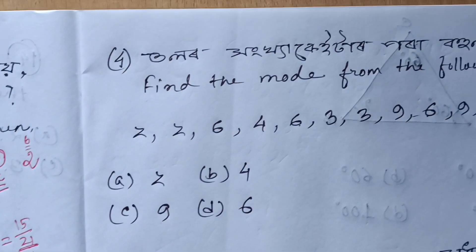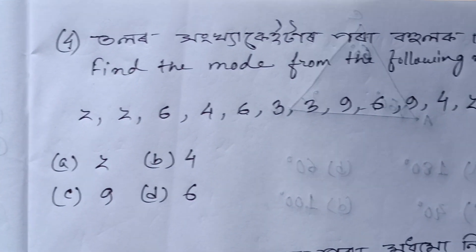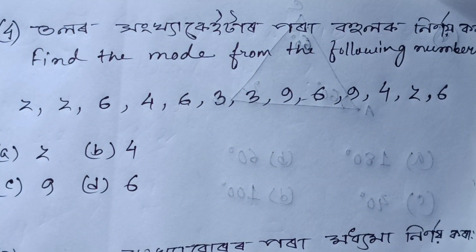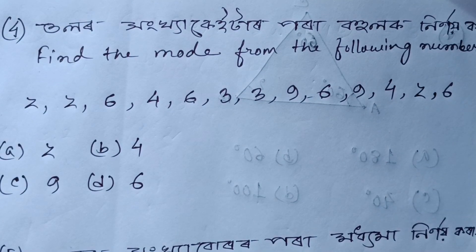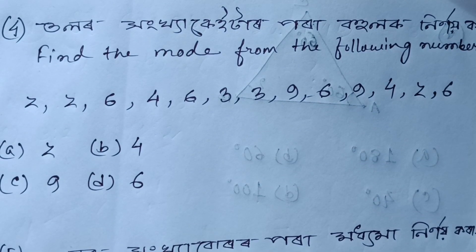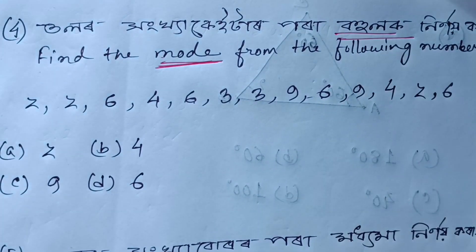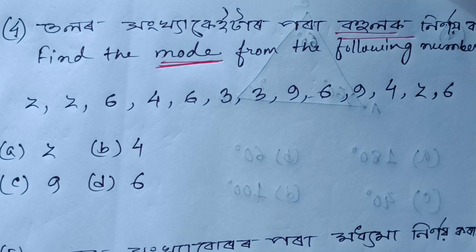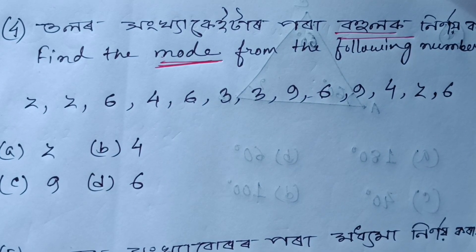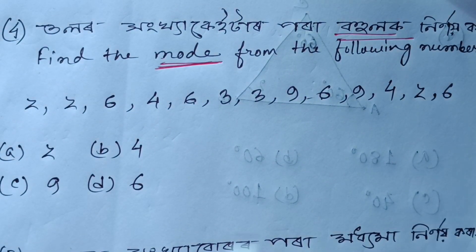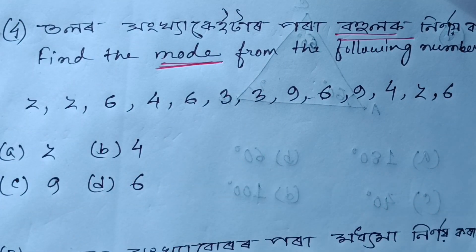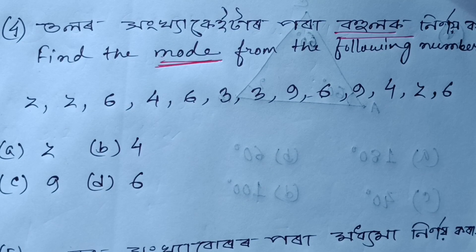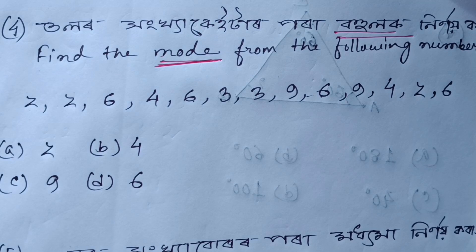Then next is the most important thing: find the mode from the following numbers. Mode is the most important thing. The mode is the value that repeats the most. Basically, it's the one that appears most frequently.